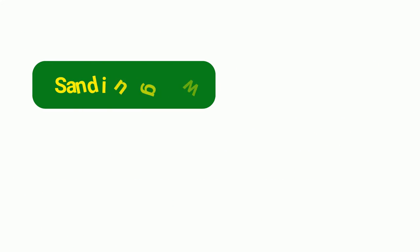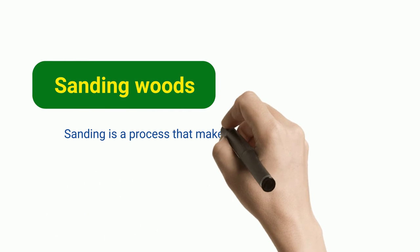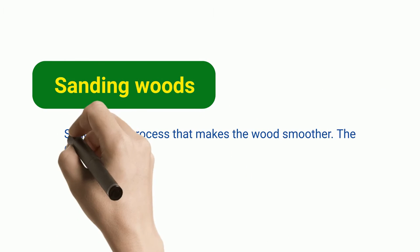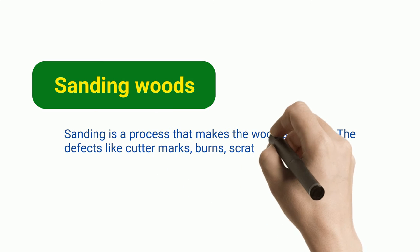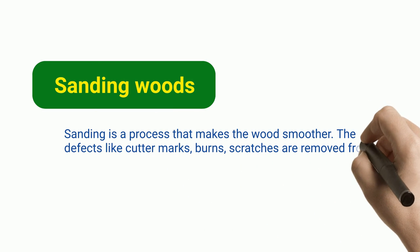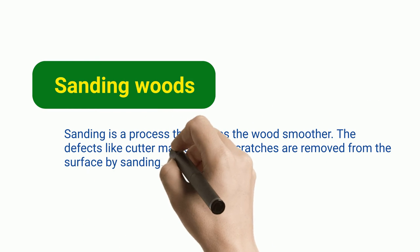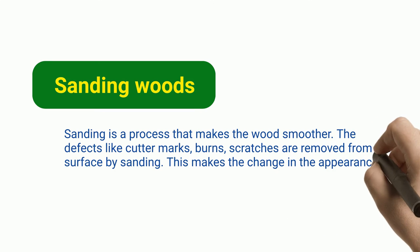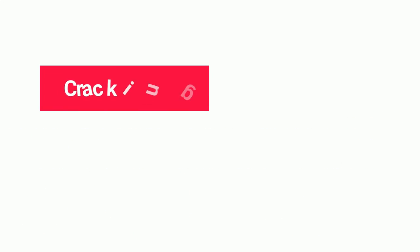Sanding woods: sanding is a process that makes the wood smoother. Defects like cutter marks, burns, and scratches are removed from the surface by sanding. This makes a change in the appearance of the wood.